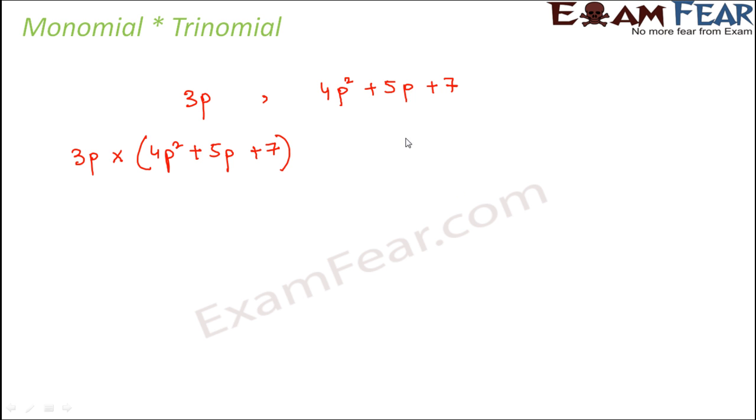So here again make use of the distributive law, but the only difference here is normally the distributive law says a into (b + c) is equal to a into b plus a into c, but here instead of b + c you also have one more term that is d, so it becomes a into b plus a into c plus a into d.